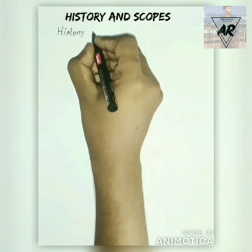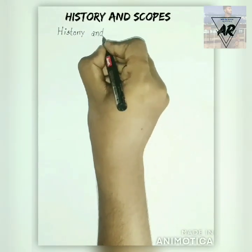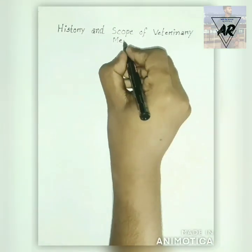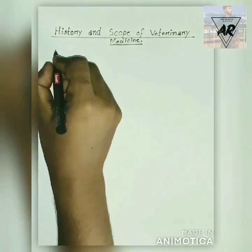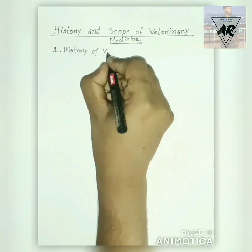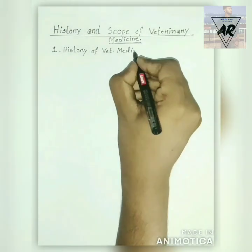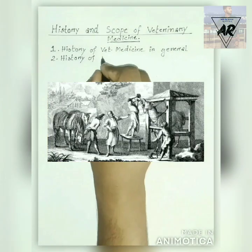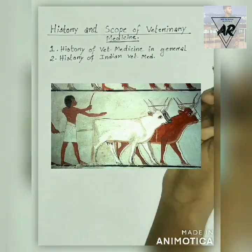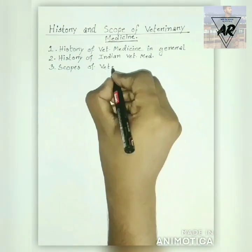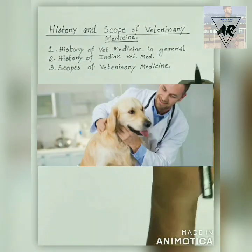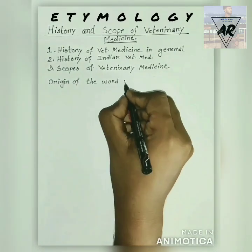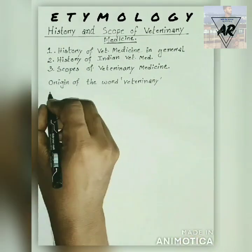Hello and welcome everyone. Today we are going to talk about the history and scope of veterinary medicine. For better understanding, we can divide the topic into three main parts: history of veterinary medicine in general, history of Indian veterinary medicine, and scopes of veterinary medicine. Let us briefly go through the etymology or the origin of the word 'veterinary'.